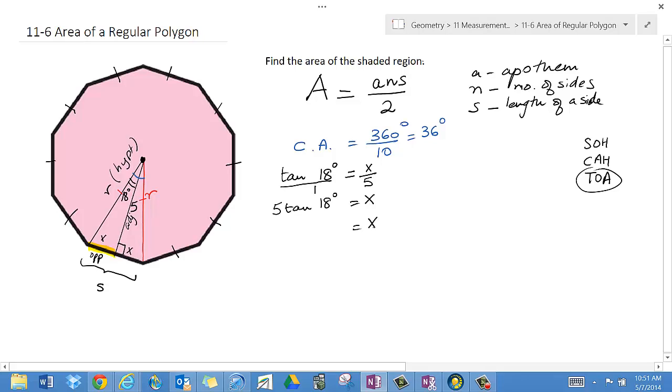Let me cross multiply. I get 5 tangent 18 degrees equals X. Before I go any further, I make sure that my calculator is in degree mode. And then I do 5 times tangent 18, which gives me 1.62, etc. I'm not going to round it at this moment because I want the greatest accuracy, and it's usually wise to round at the end.